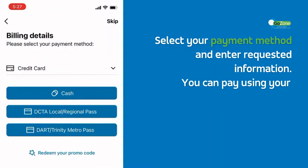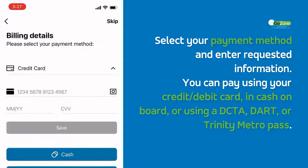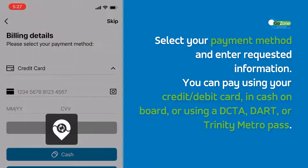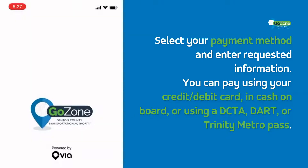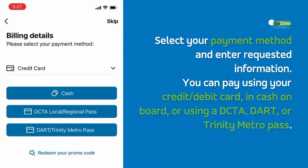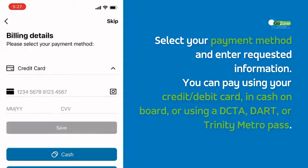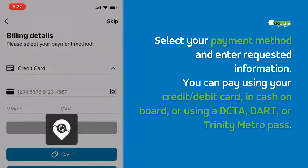Select your payment method and enter the requested information. You can pay using your credit or debit card, in cash on board, or using a DCTA, DART, or Trinity Metro Pass.